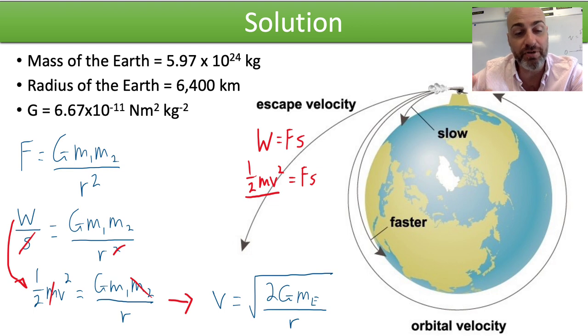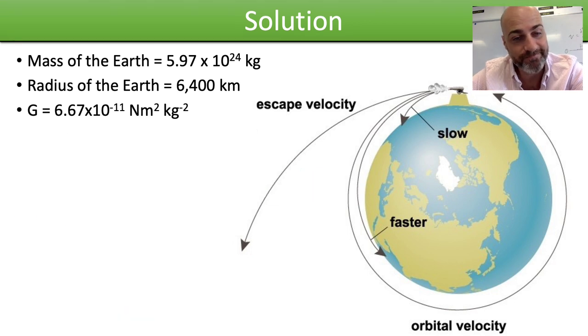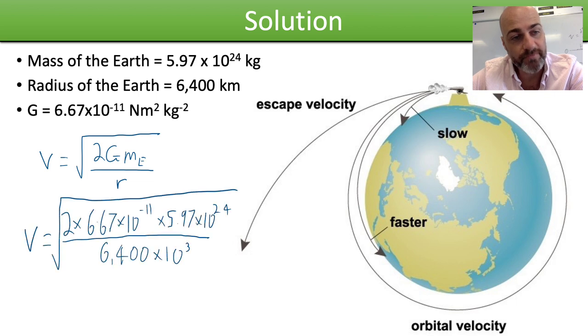Then you just simply plug in the values like so. Here's our equation, there's our values. You need to remember that the radius of the Earth is stated in kilometres, so you'll need to multiply that by 10 to the power of 3 for kilometres.